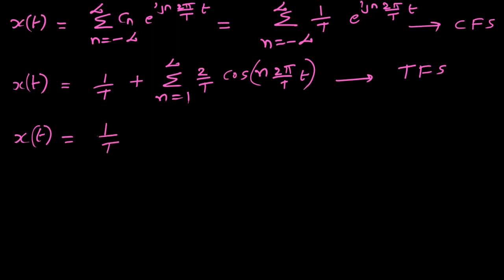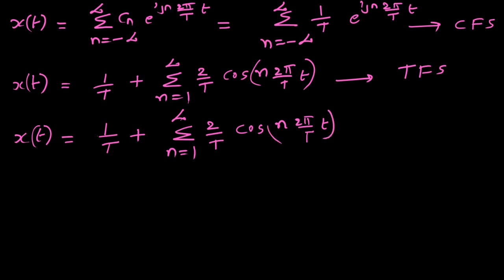In polar form: x(t) equals R0 plus the sum from n equals 1 to infinity of Rn times cosine(n omega-naught t minus phi_n), where Rn equals 2/T and phi_n equals 0. This is the polar form of the Fourier series.